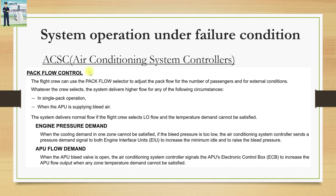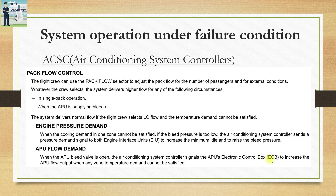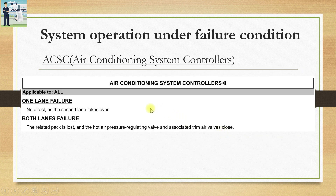One ACSC is provided for each pack for temperature control and flow regulation. Pilots can use the pack flow selector in the overhead panel to select pack flow depending on the number of passengers and external conditions. In case of single pack operation or when the APU is supplying bleed air, the flow defaults to high regardless of the knob position. If the low setting is selected and temperature demand is not met, the system delivers normal flow. If engine pressure demand is not met, the ACSC sends a signal to the engine interface units to increase minimum idle RPM to raise bleed pressure. Similarly, if the APU bleed valve is open and temperature demand is unmet, the ACSC signals the electronic control box to increase APU flow output.